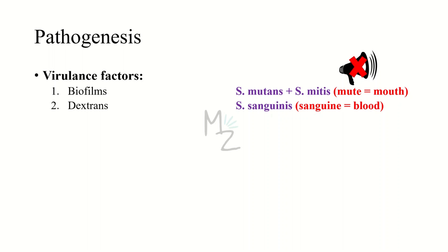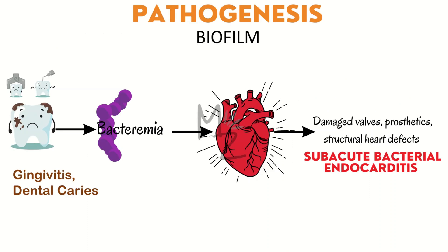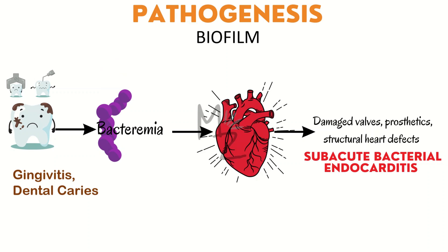In the mouth, these bacteria can cause gingivitis and dental caries. The second important species is Streptococcus sanguineus, which releases dextrans that cause subacute bacterial endocarditis. You can memorize this because 'sanguine' means blood and there is a lot of blood in the heart. If a person has a dental problem and goes to the dentist for a procedure or extraction, bacteria will gain access to the blood — a condition called bacteremia. In the mouth, this bacterium causes gingivitis and dental caries.